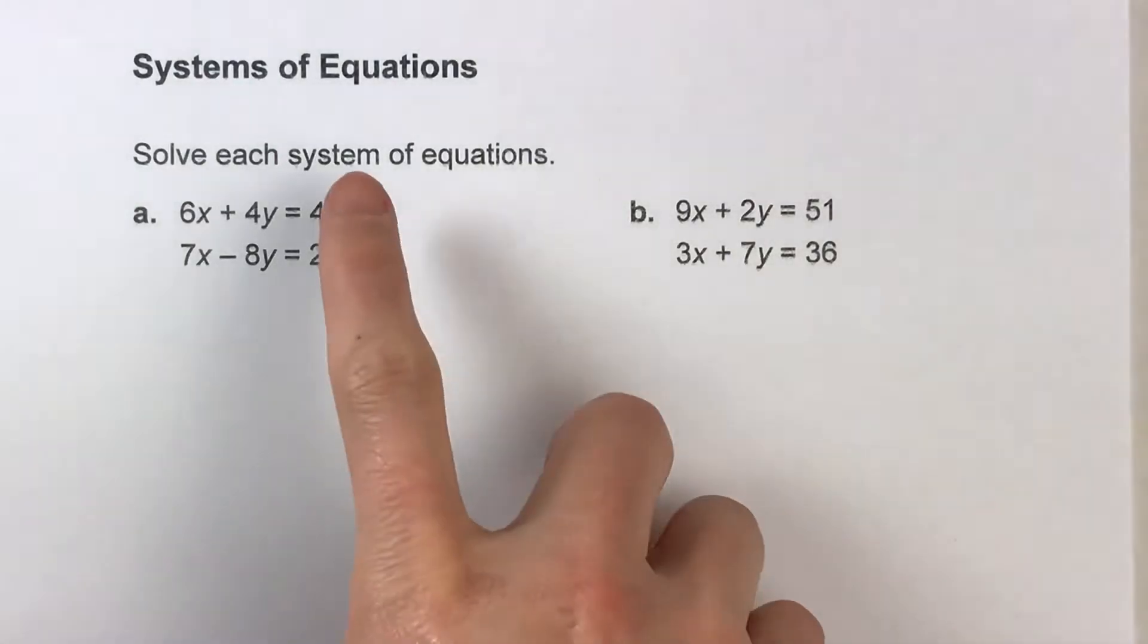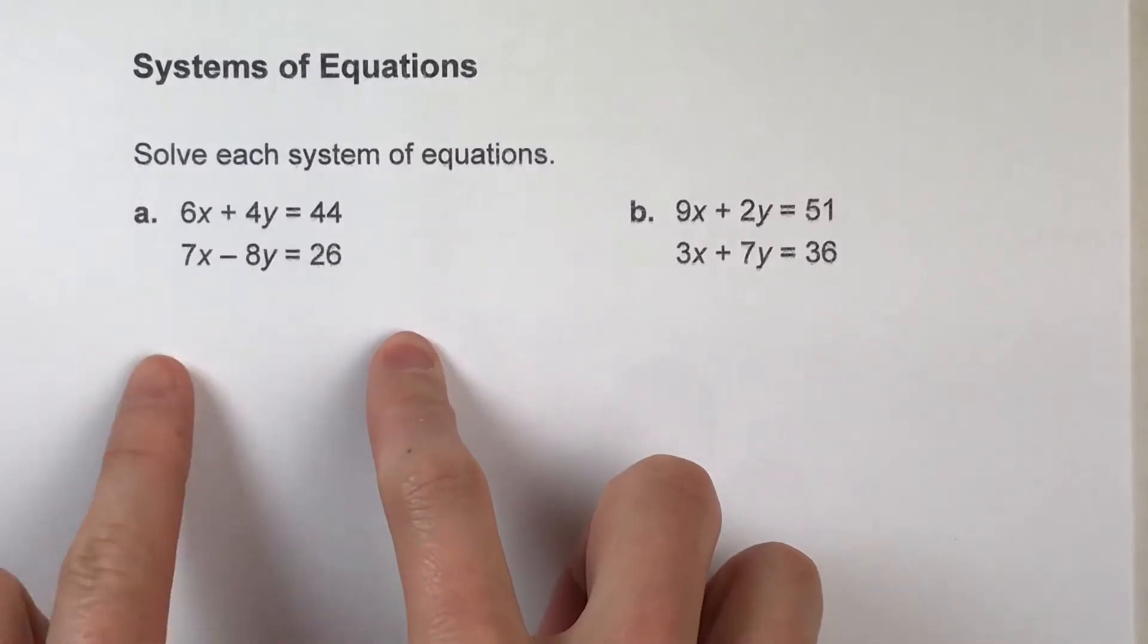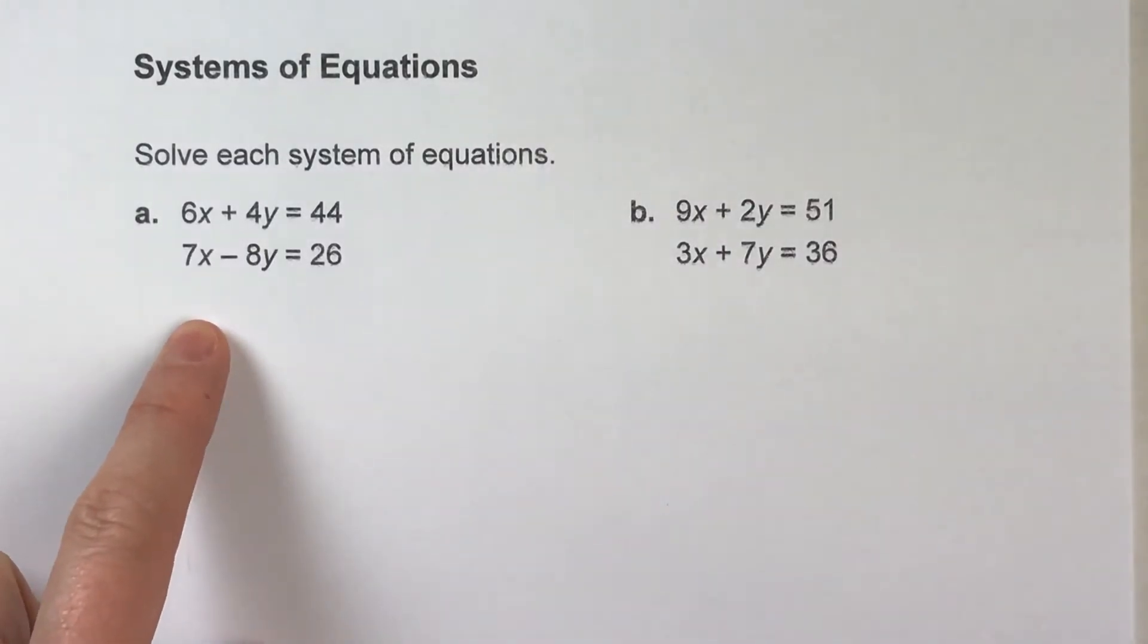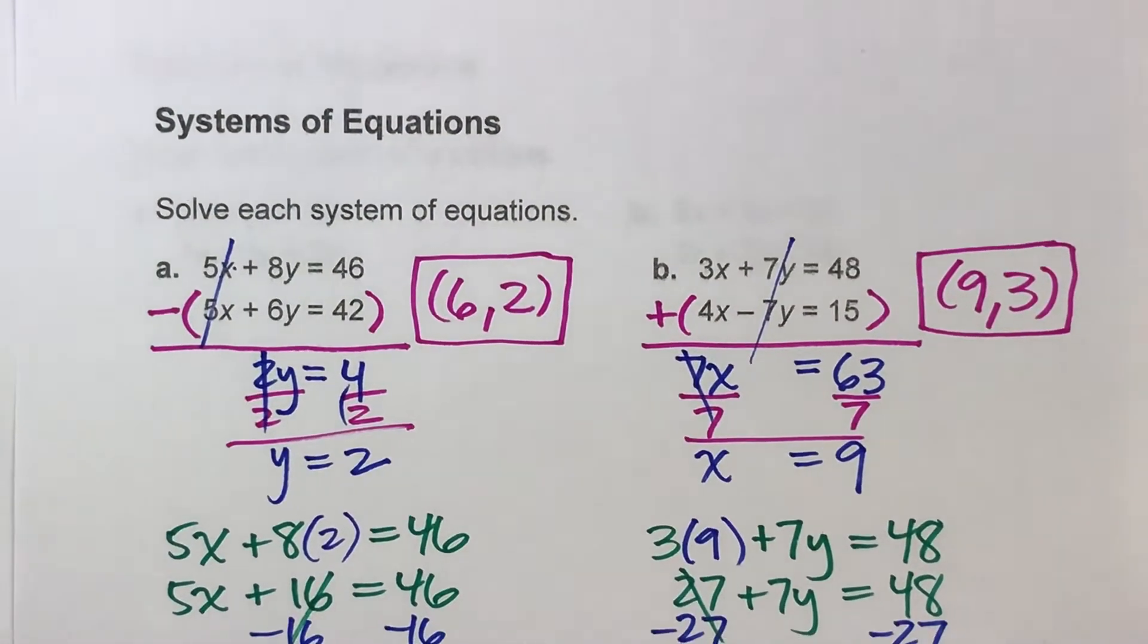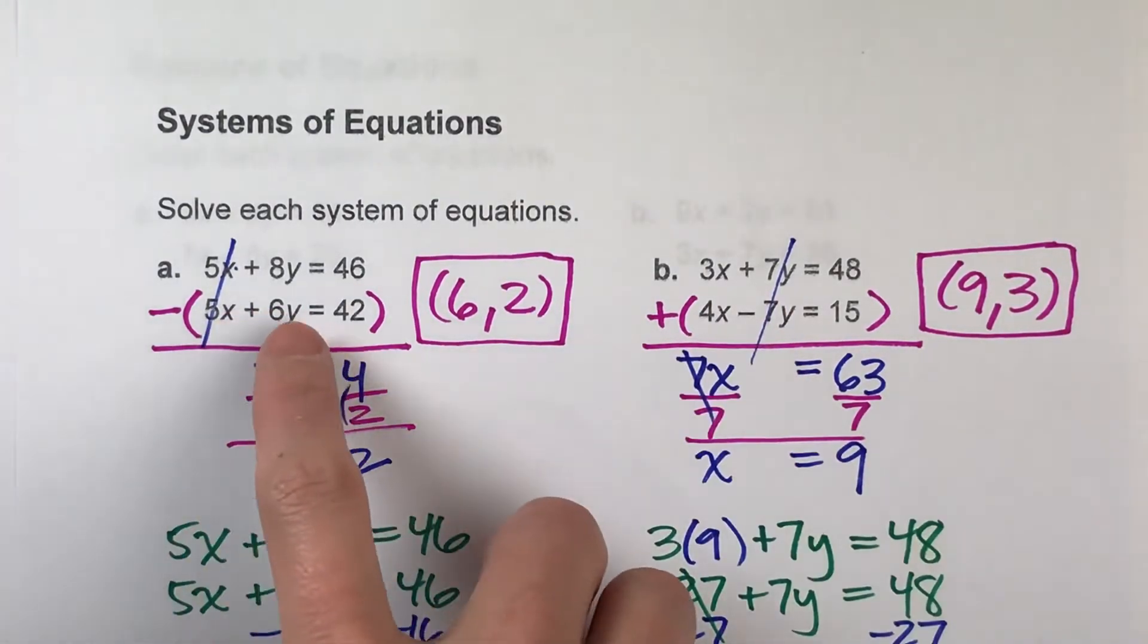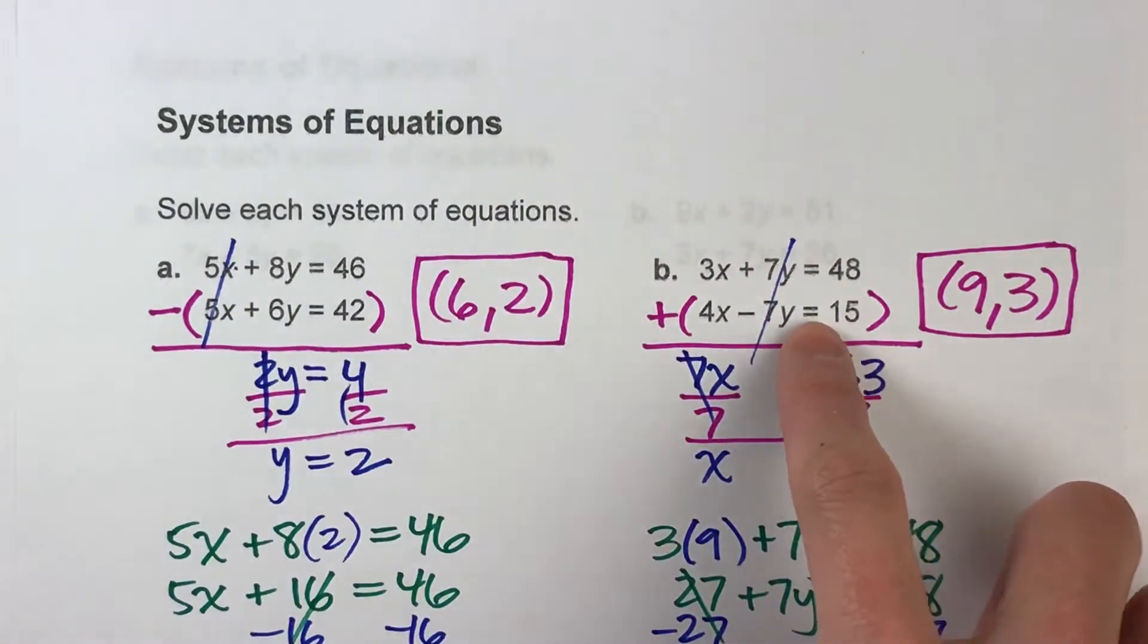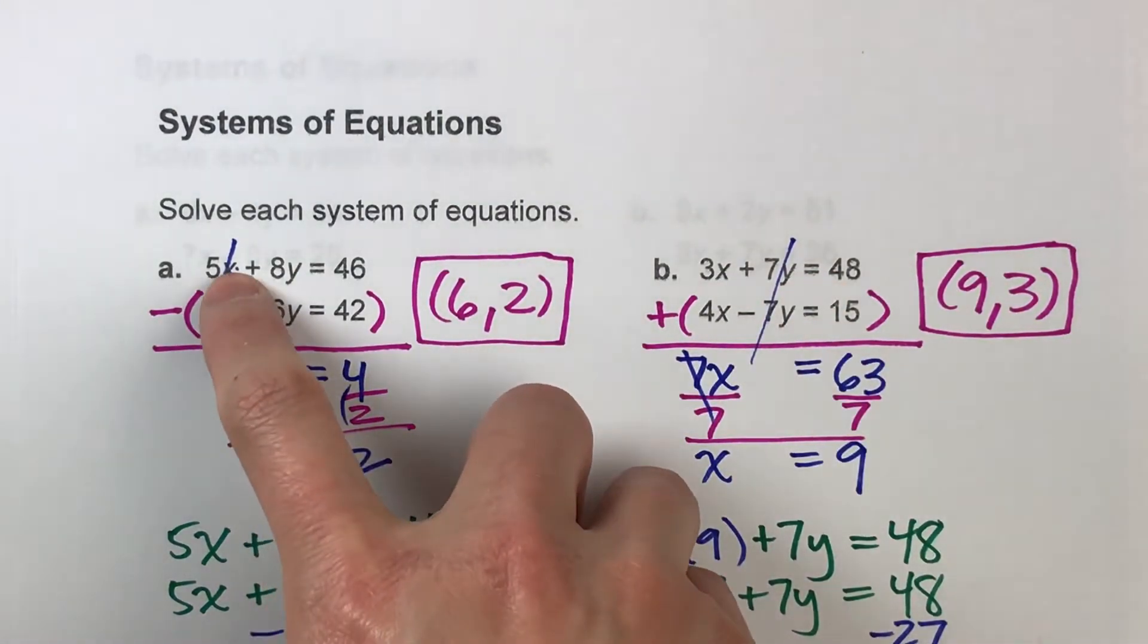Today we're solving systems of equations when both equations are in standard form. In my previous video I showed you that when we have two equations in standard form, we want the X's or the Y's to match up, meaning the number in front of X is the same in both equations.